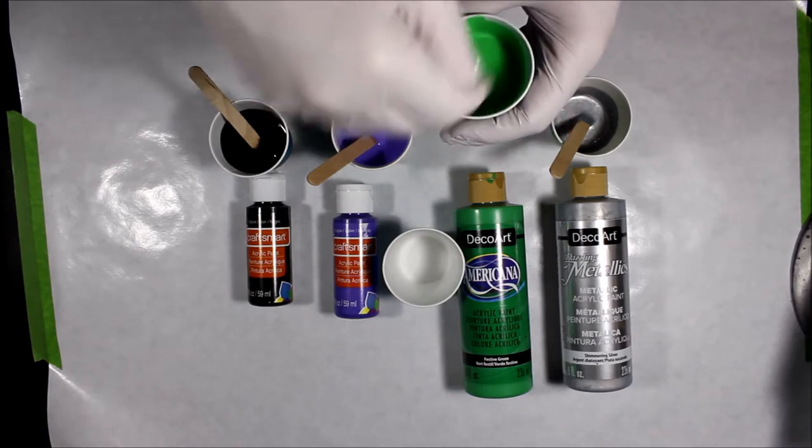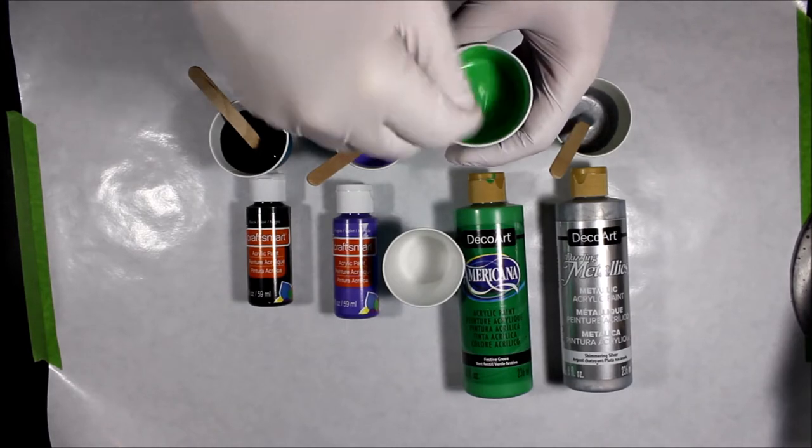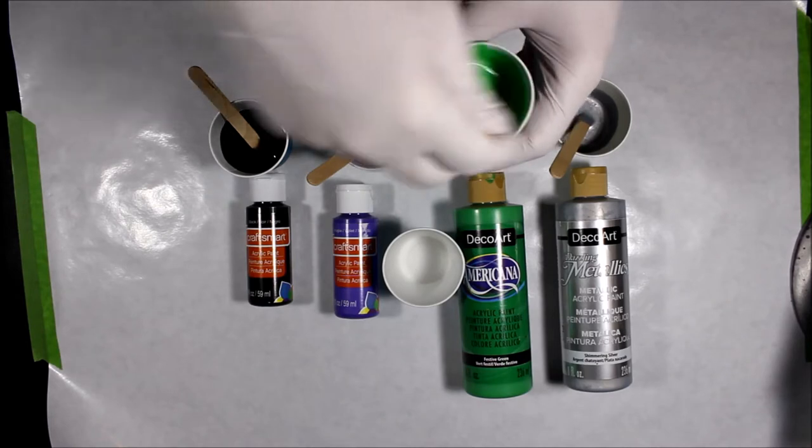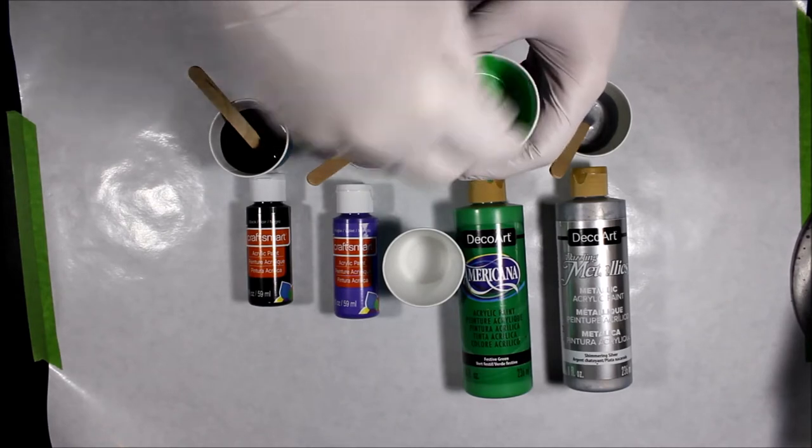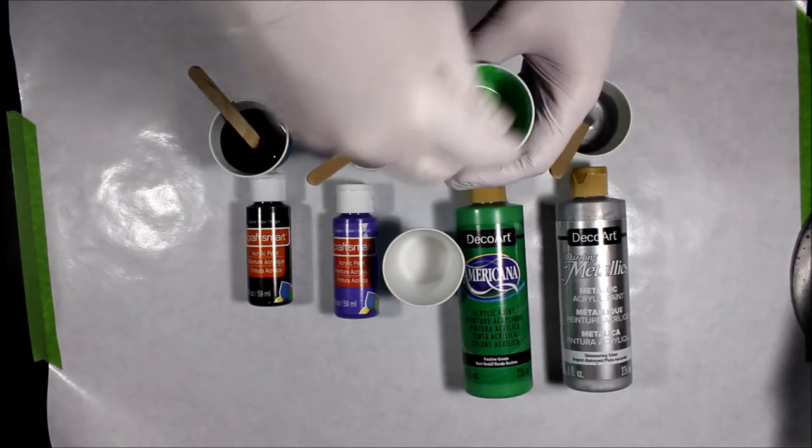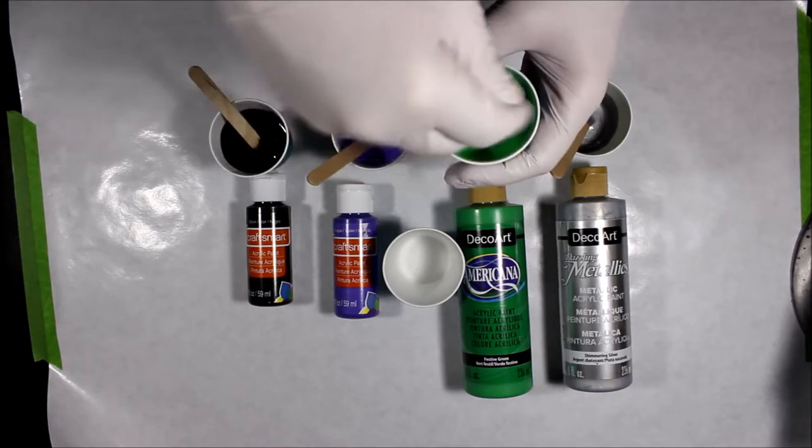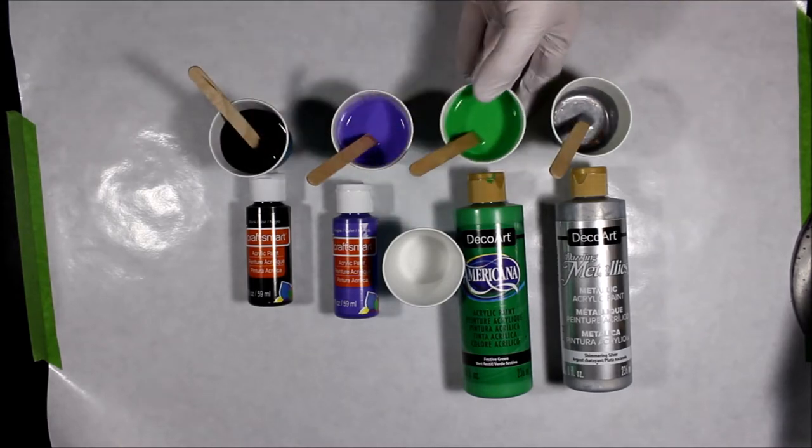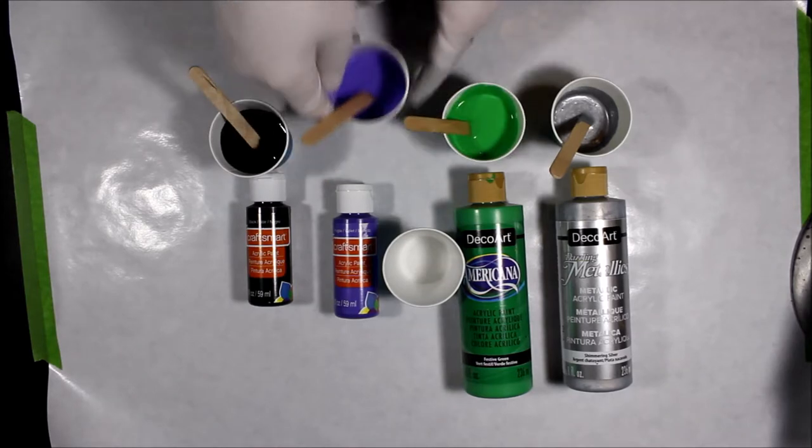I'm just going to pour this right onto the freezer paper that I have on the table. We just need a nice big flat acrylic skin so that once this all dries we can cut the dried acrylic skin and use it to cover the surface of our acrylic appliques.